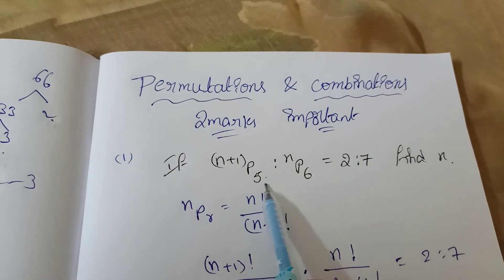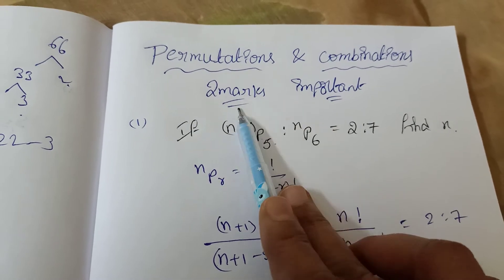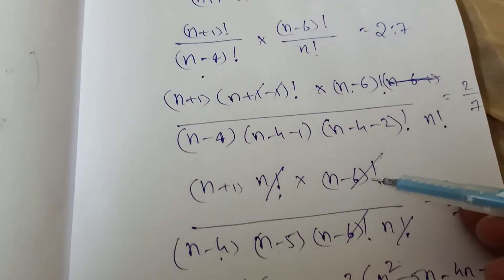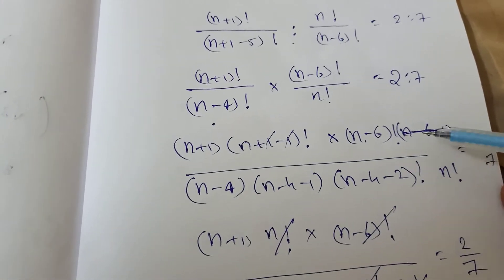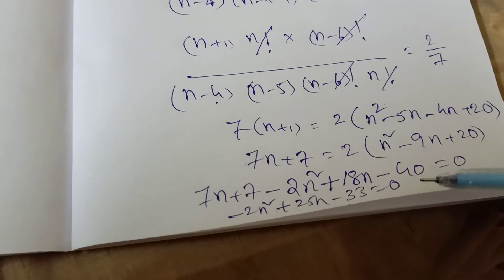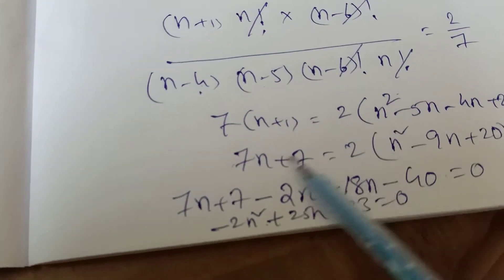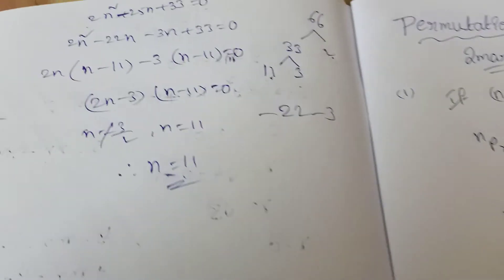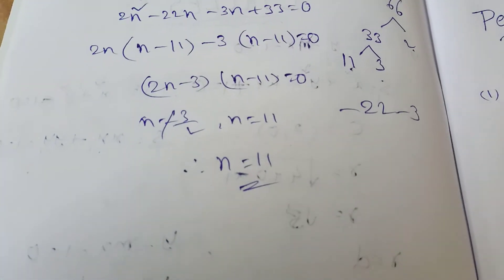This type of question may come as a four-marks problem also. The procedure is: cancel the factorials, then form a quadratic equation to find the value of n.